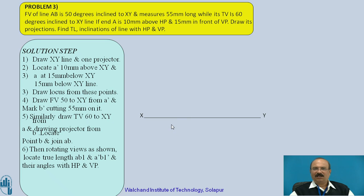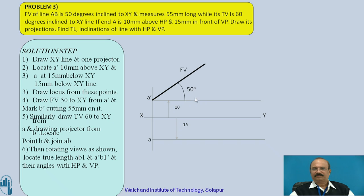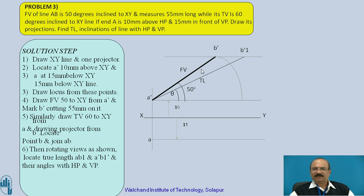Locate point A: 10 millimeters above the horizontal plane and 15 millimeters below the XY reference line, that is in front of the vertical plane. Draw 50 degrees as given. Draw the locus of point B, then keep the compass on the reference point and locate the intersection on the locus. You can refer to the rest of the problem step by step following the same procedure as the previous problem.